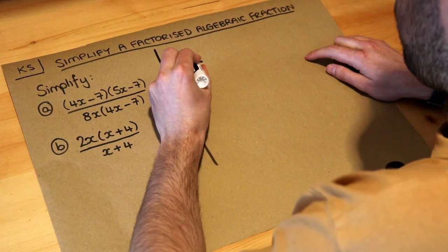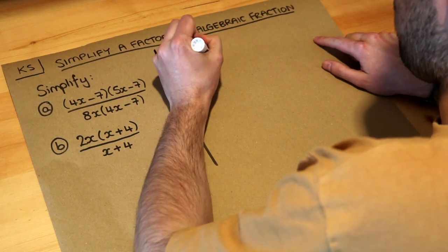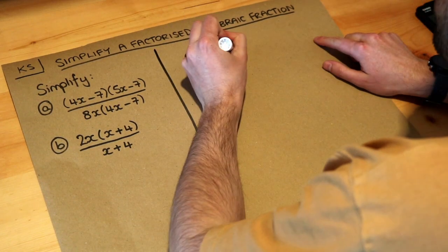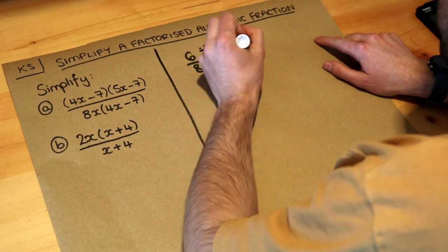We would look for a common factor, so what do 6 and 8 have in common? They have a factor of 2 in common. We divide the numerator and denominator by 2, and 6 divided by 2 is 3, and 8 divided by 2 is 4.